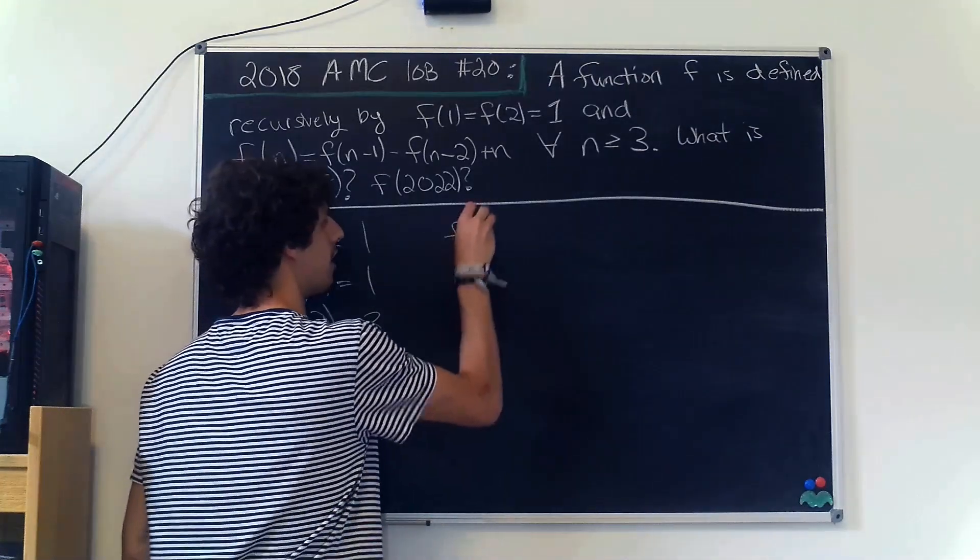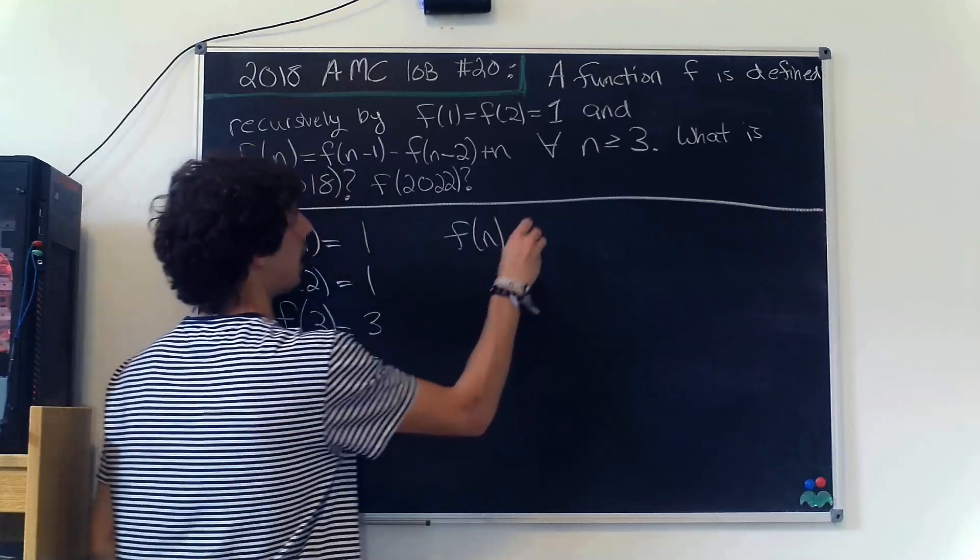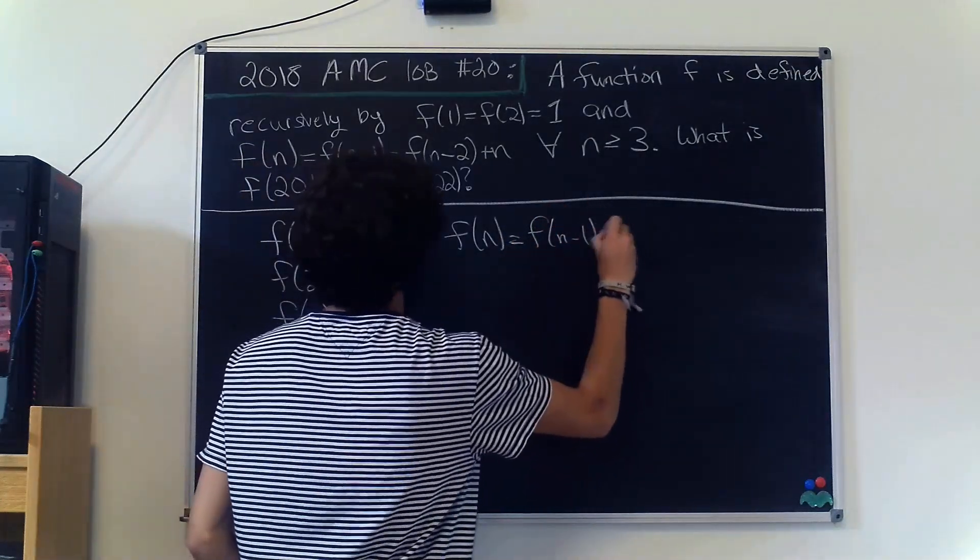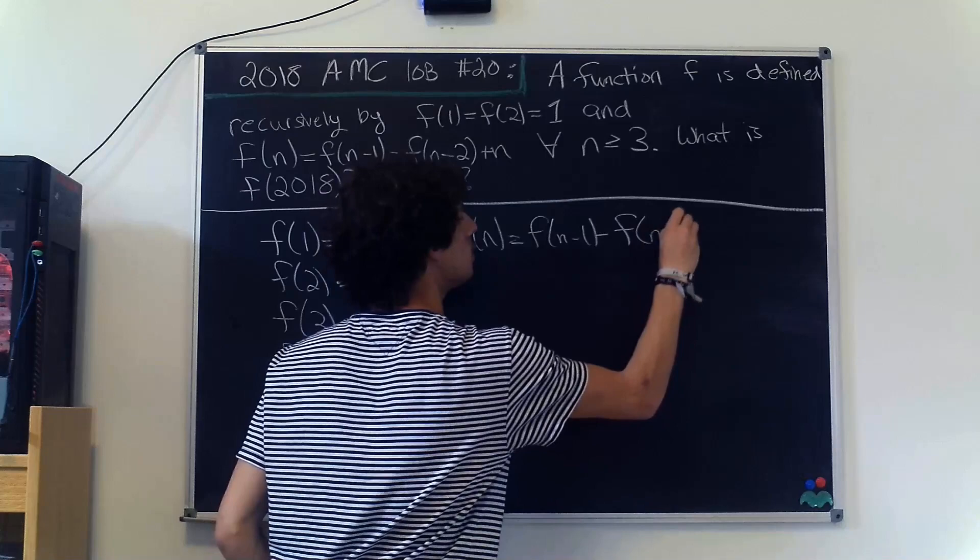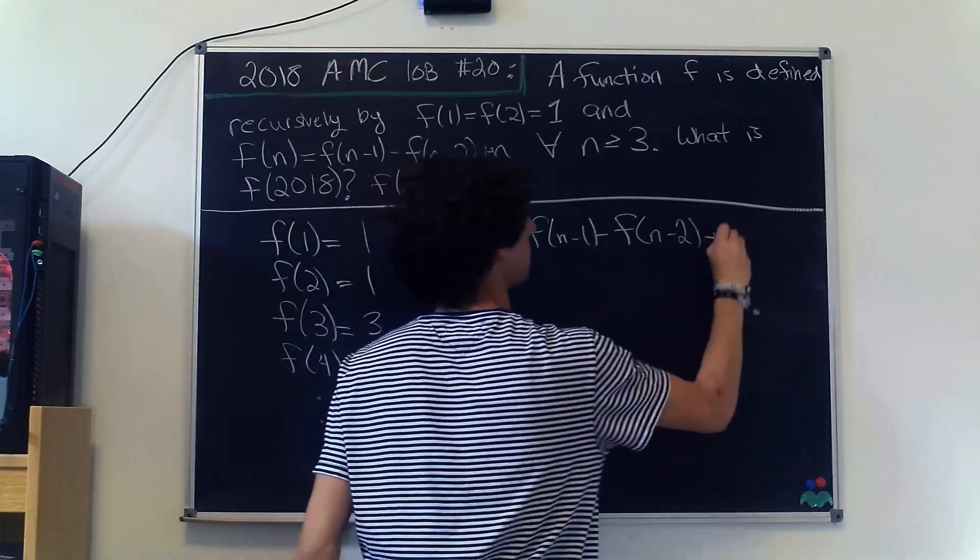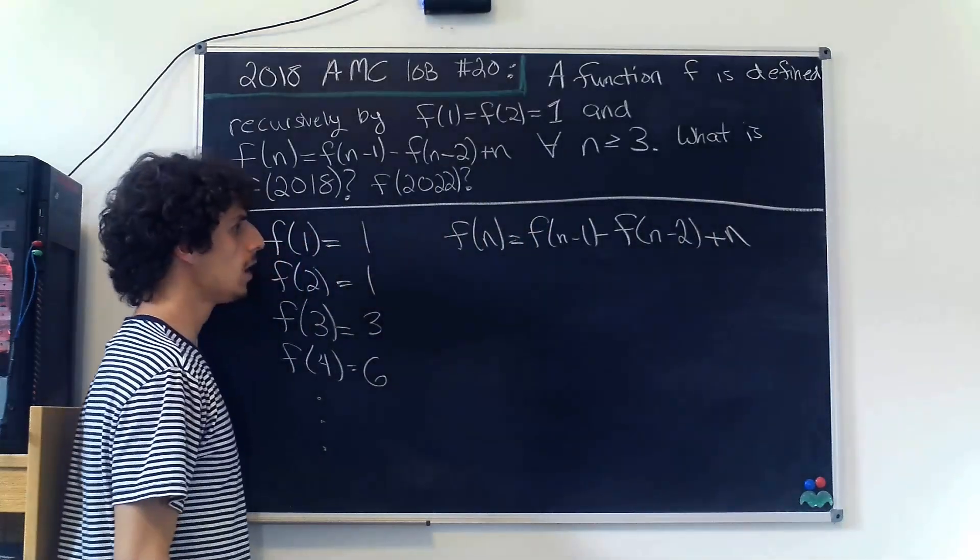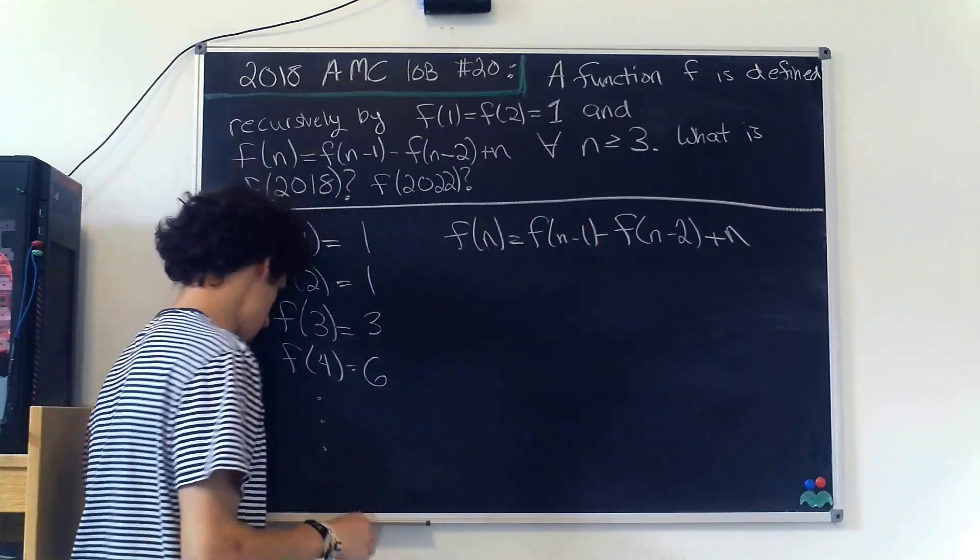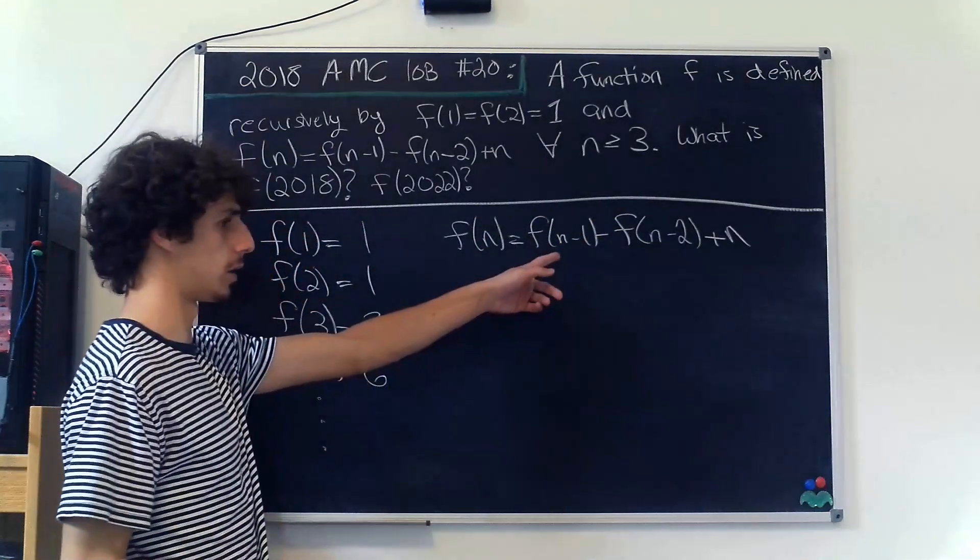First we have f(n) equals f(n-1) minus f(n-2) plus n. But now let's expand this f(n-1) term that I am underlining in yellow and expand it out using this recursive definition that I will put this yellow dot next to right here.